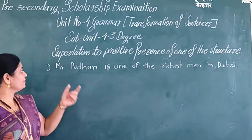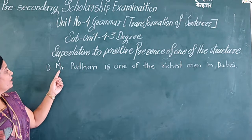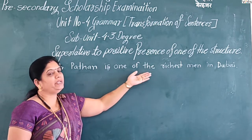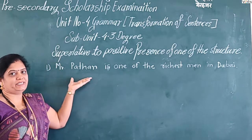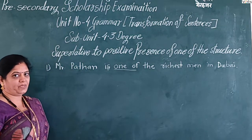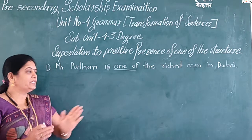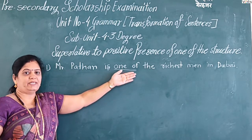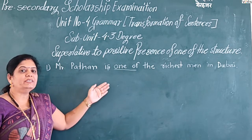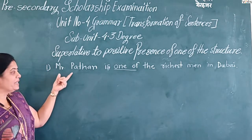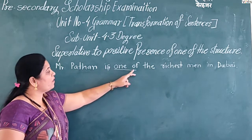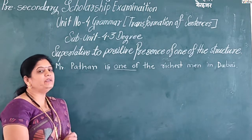Now look here at this sentence: 'Mr. Pathan is one of the richest men in Dubai.' In this sentence, the structure 'one of' is present. When the structure 'one of' is present in the sentence, how do we change this sentence to positive degree?